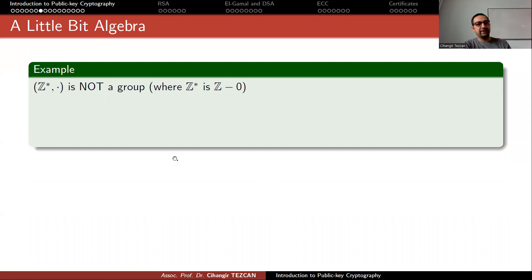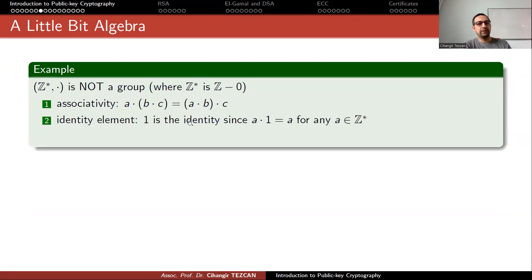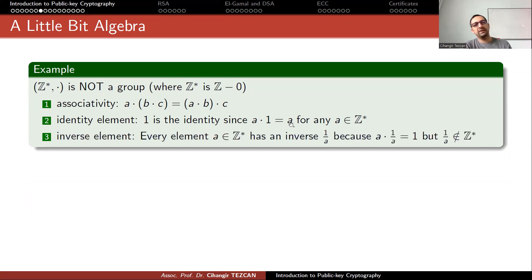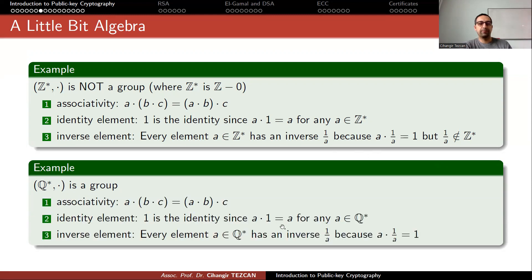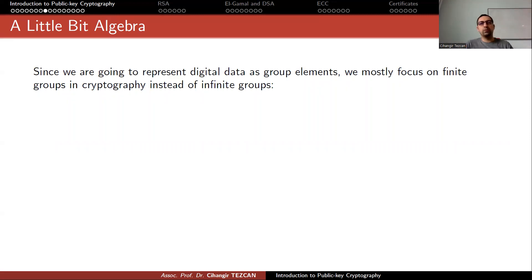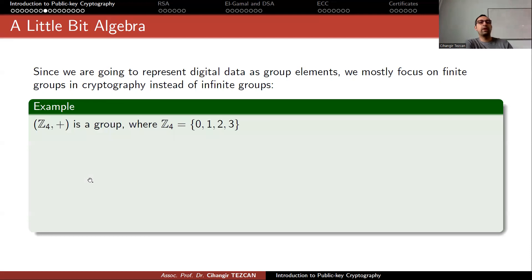Z* (integers minus 0) with respect to multiplication is not a group because we don't have inverse elements — for instance, if a = 3, we cannot find an integer such that 3 times that integer equals the identity element 1. However, rational numbers with multiplication do form a group because 1/a is inside that set. These are infinite groups, but since we represent digital data as group elements, we mostly focus on finite groups in cryptography.